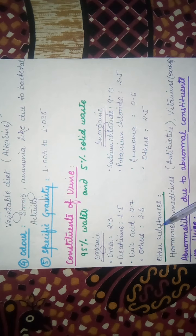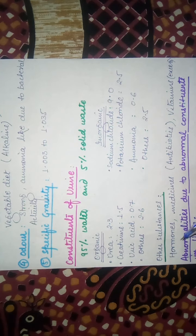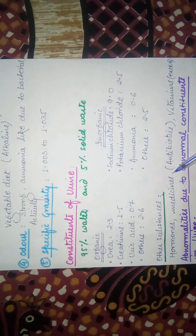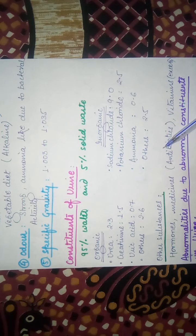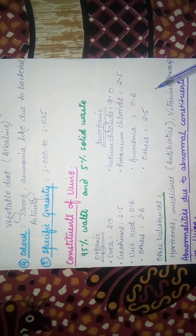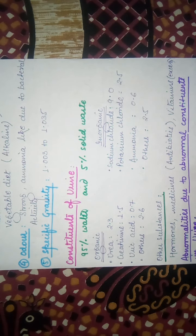Our body has many hormones which are discharged from the body. If a person is on a medical diet or consuming tablets and a lot of antibiotics, those can also be found in urine. There are also many vitamins which are water-soluble that are excreted through urine.